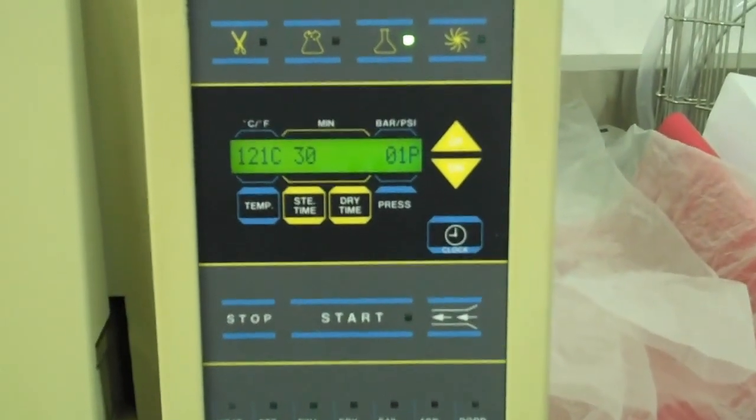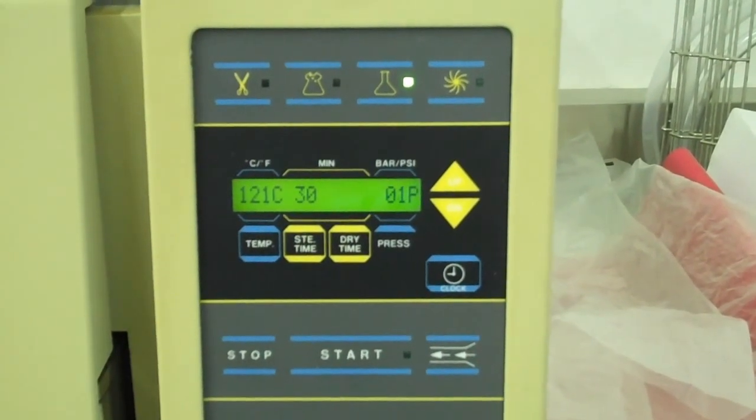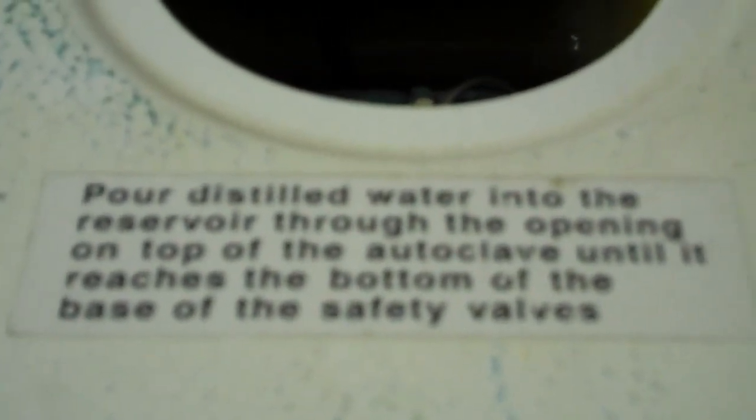An autoclave is a pressure cooker with high temperatures, controlled by this microprocessor on the top. There's an opening to the tank. This tank holds distilled water and also has the outlets. As you can see, there's some pipes that do the pressure release of the pressure cooker.